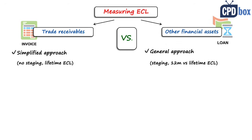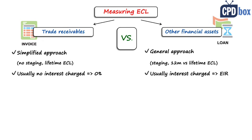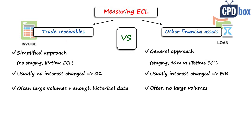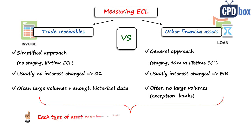Another difference is that most trade receivables do not carry an interest charge, so their effective interest rate is zero — meaning no discounting in most cases. Other assets like bonds and loans usually carry some interest and therefore have an effective interest rate, and some discounting is needed. Also, most companies with trade receivables have sufficient transaction history to measure ECL, whereas most companies do not have sufficient data for other assets like bonds or individual loans. The exception is banks and financial institutions, since lending is their core business and they have monitoring processes in place.